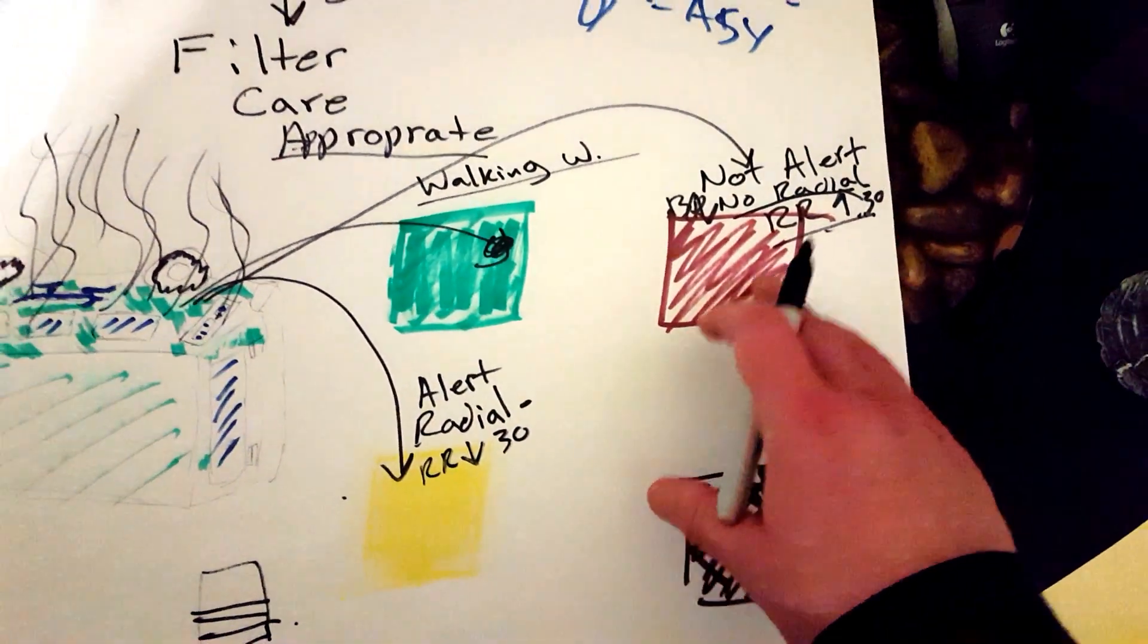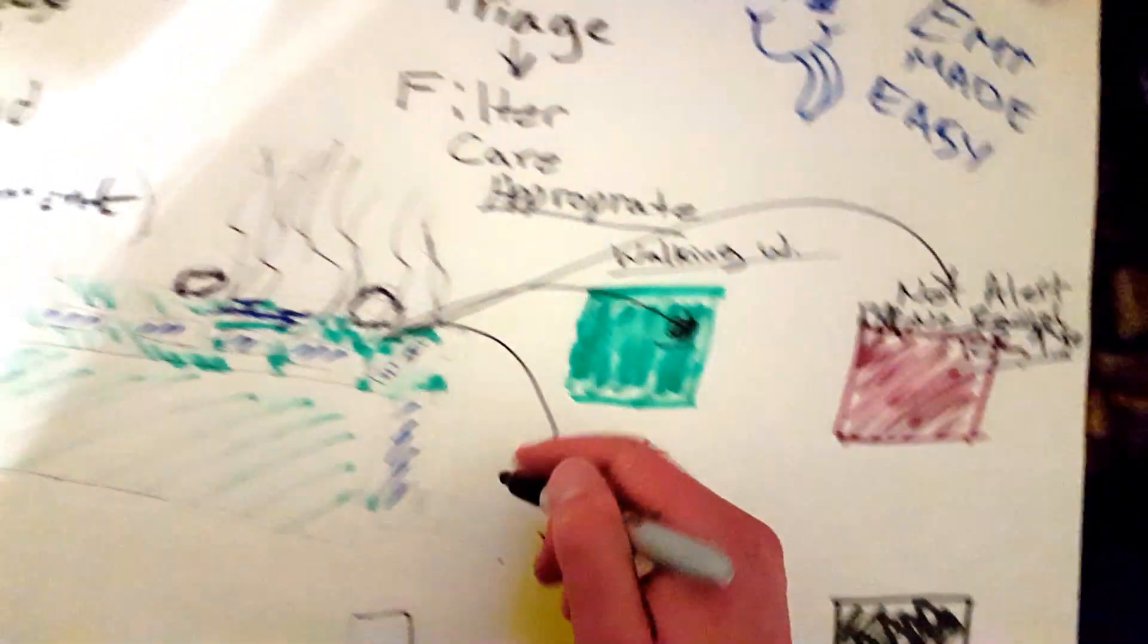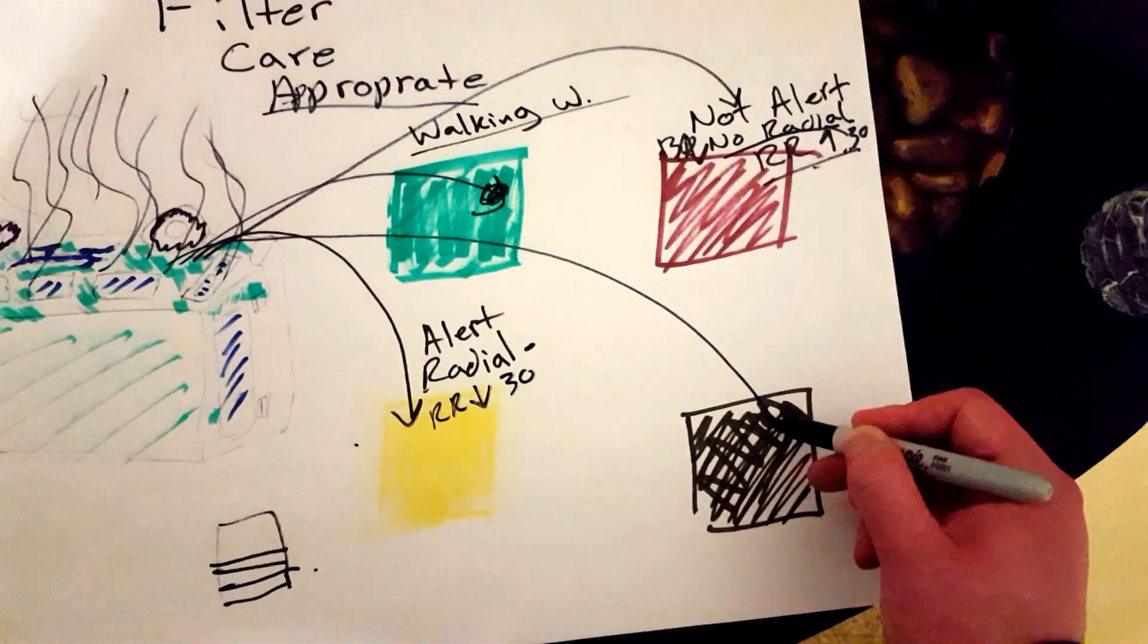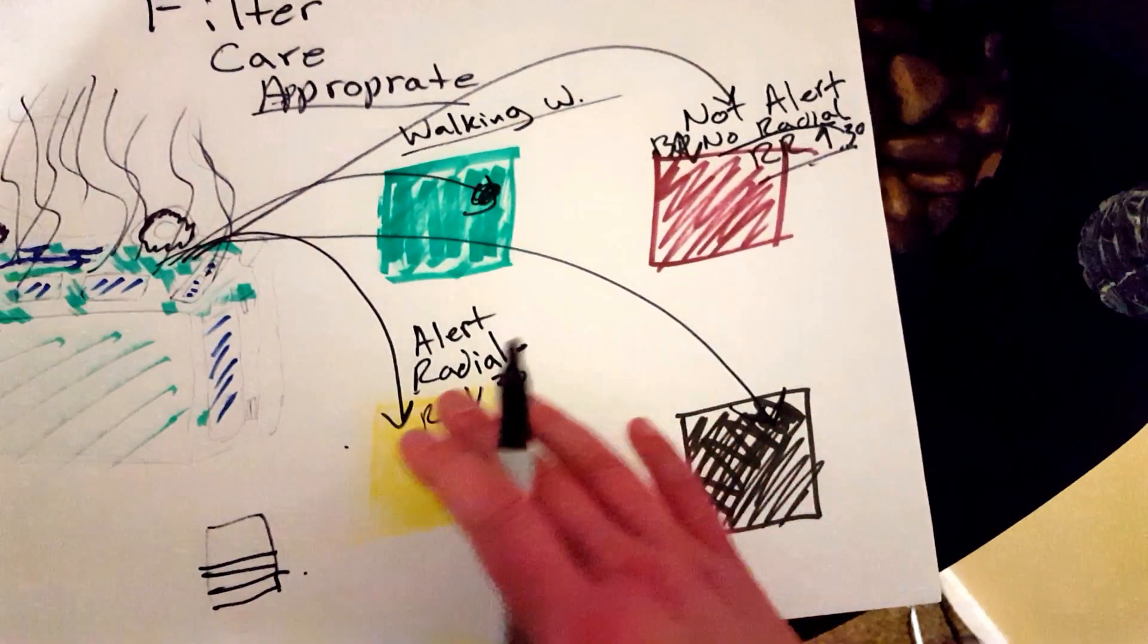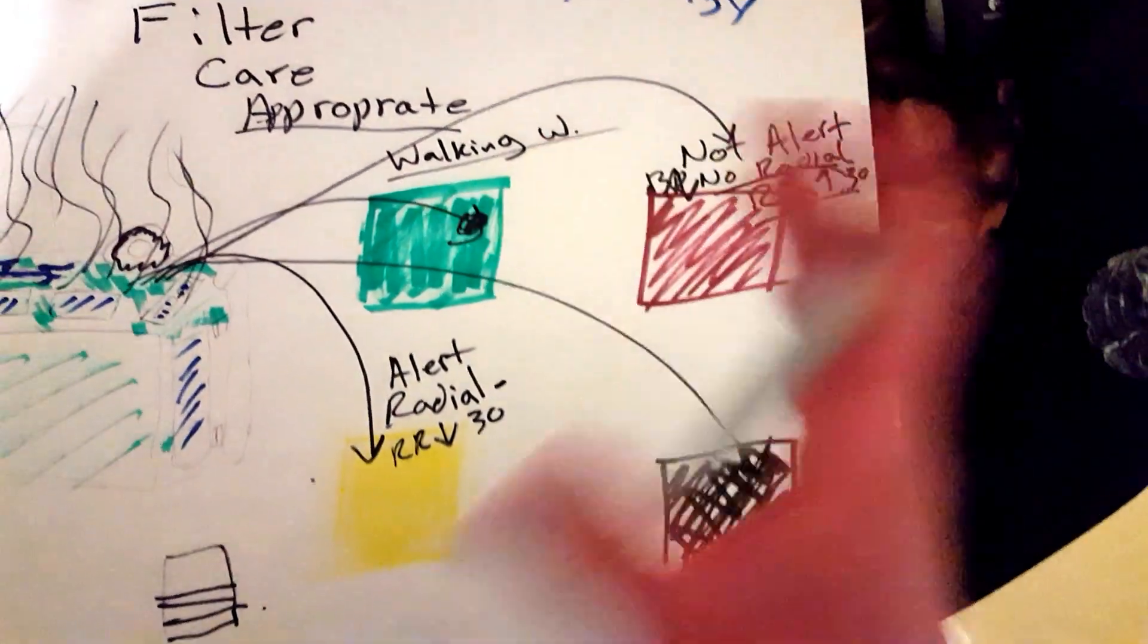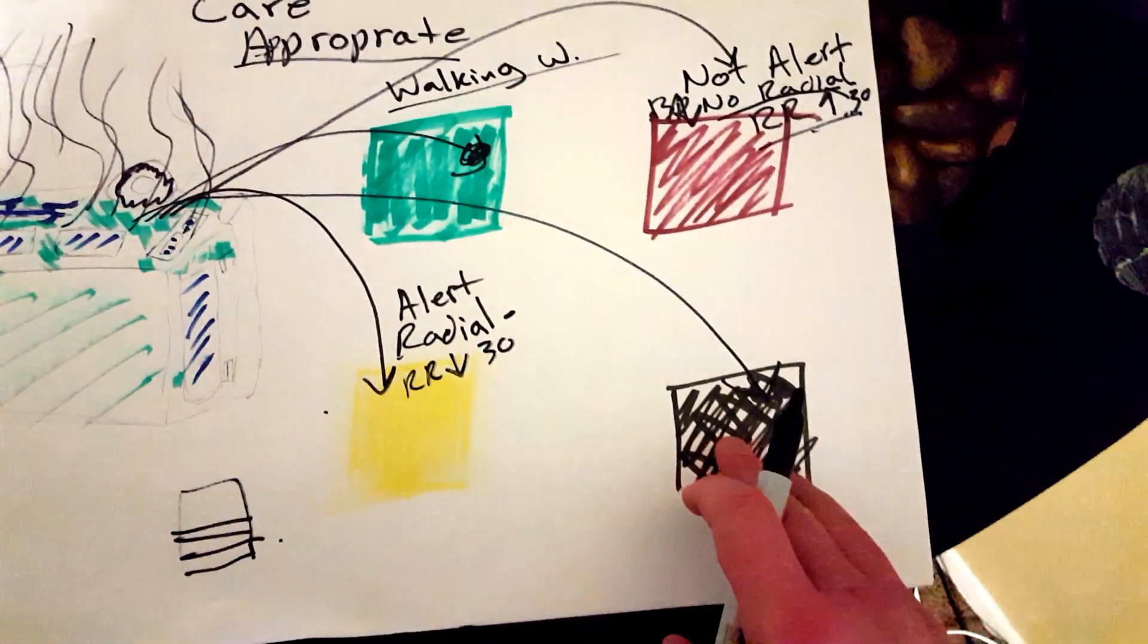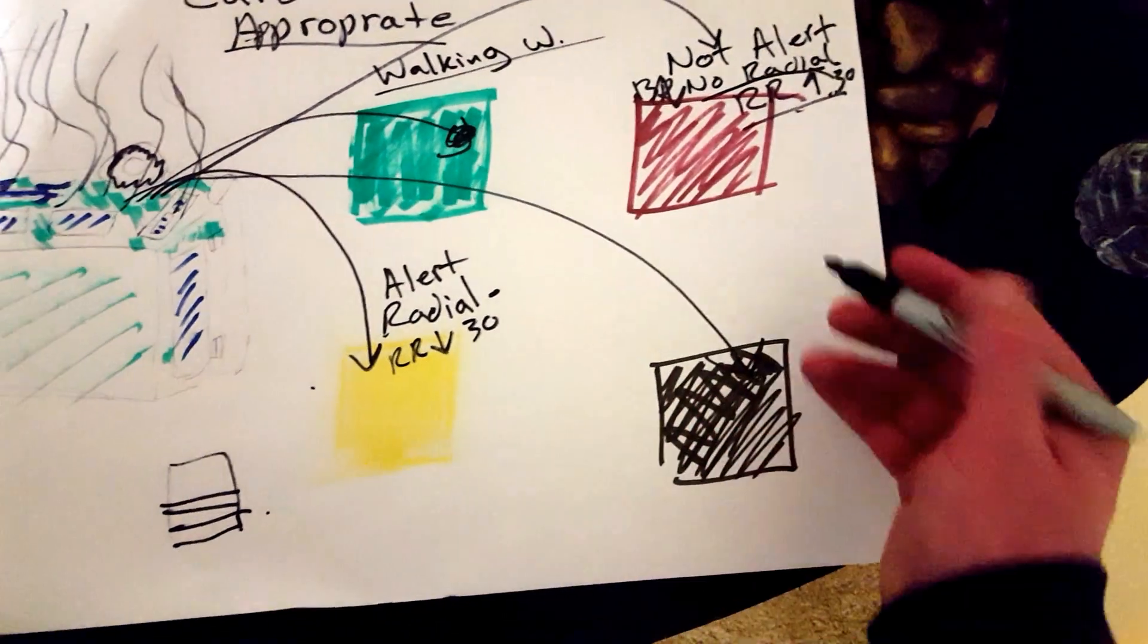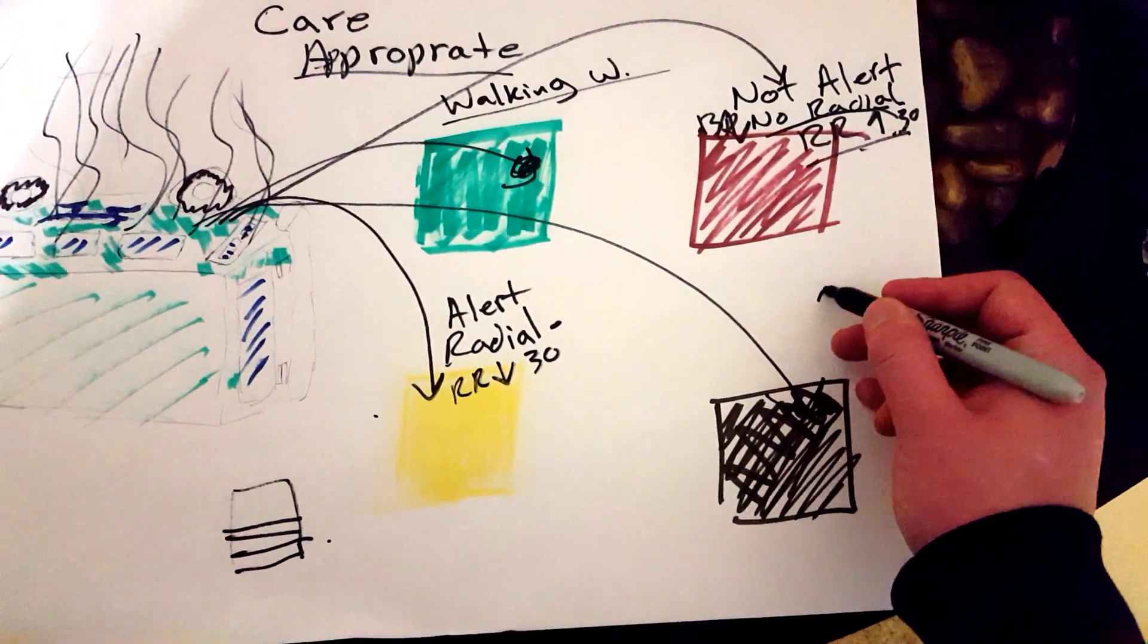The patients that have no pulse, are not breathing, and are pretty much dead, they get a black. They get the black label and they will go here.